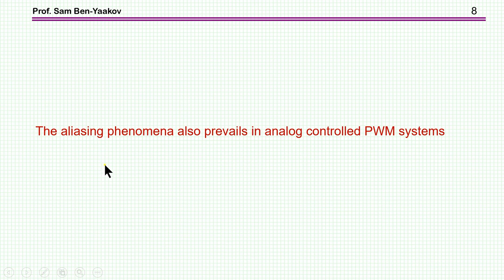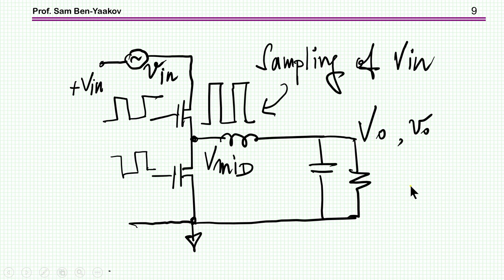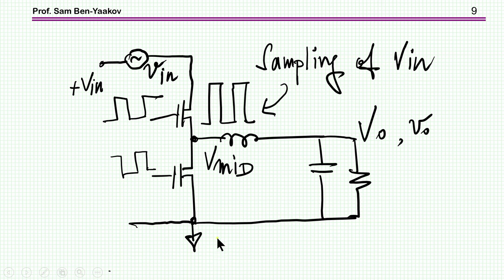Less known is the fact that the aliasing phenomenon also prevails in analog-controlled PWM converters. To understand it, let's look at this synchronous buck converter. Suppose we have an AC component — a disturbance on the input — and the process of switching is in fact sampling the VIN. So this is a sampling process; we are multiplying the PWM signal times this voltage, and we are going to have all this aliasing and folding effect.